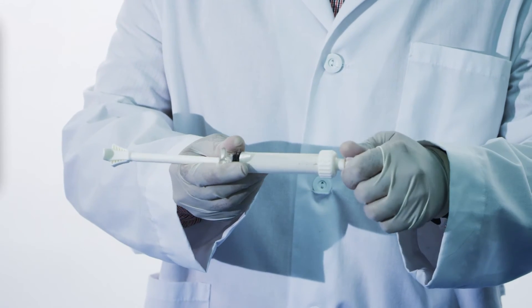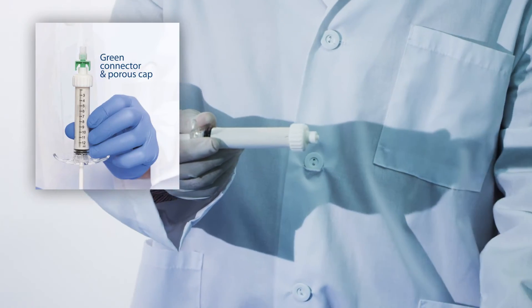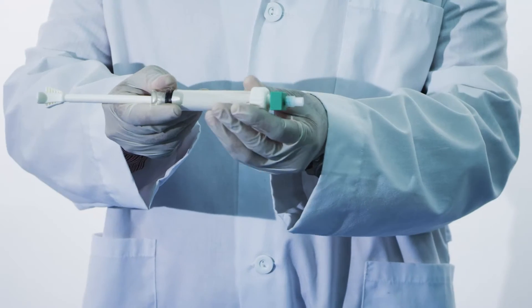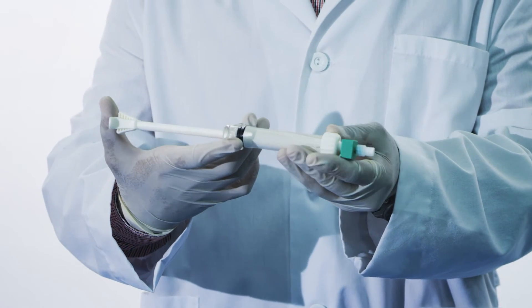When mixing is complete, remove the closed cap and attach the green connector with the porous cap. Reattach the stopper to enable the plunger and plunge the material to remove the air from the syringe.